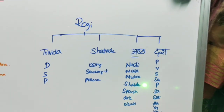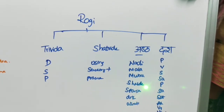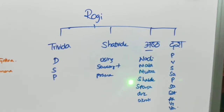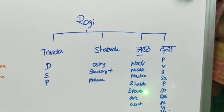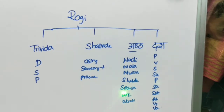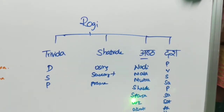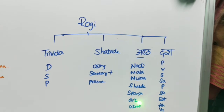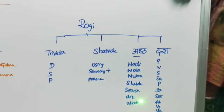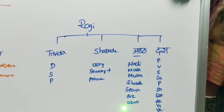Shabda means sound — we examine diseases such as deafness through Shabda Pariksha. Sparsha means by touch, through which we can conclude certain diseases. Druk refers to the person's eyesight, examined in Druk Pariksha. Akruthi refers to the overall appearance — how a person looks, whether they are walking properly, and their gait — all described in Akruthi.